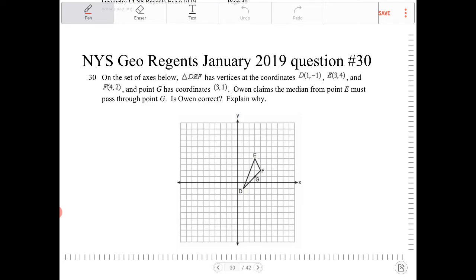Owen claims the median from point E must pass through point G. Is Owen correct? Explain.